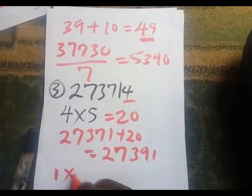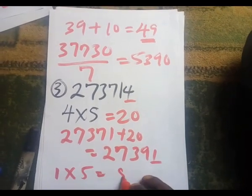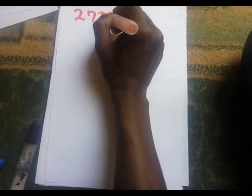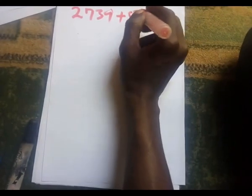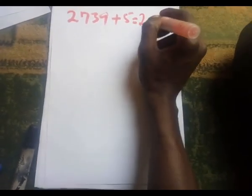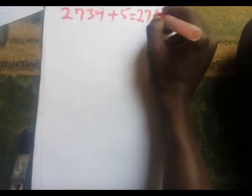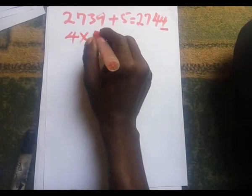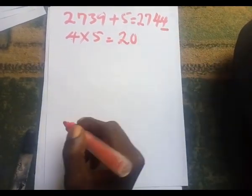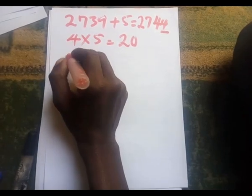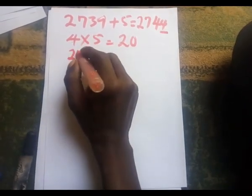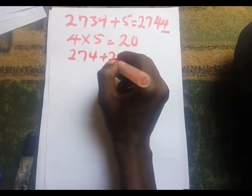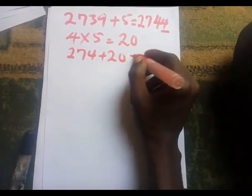The last digit of 27,391 is one. Multiply one by five to get five. Add five to 2,739, which gives 2,744. The last digit here is four, so four multiplied by five gives twenty.